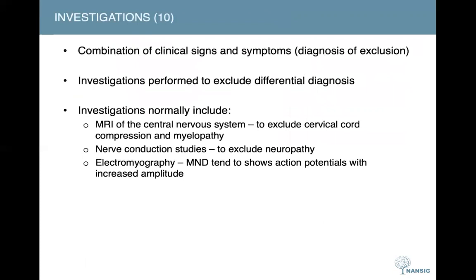Coming on to the investigations: to investigate motor neuron disease, it's important to identify a combination of clinical signs and symptoms. The goal is to exclude any other possible diagnosis. Investigations would normally include an MRI of the whole central nervous system to exclude cervical cord compression or myelopathy. You would also consider nerve conduction studies to exclude neuropathies, and electromyography, which in MND tends to show action potentials with increased amplitude compared to normal.